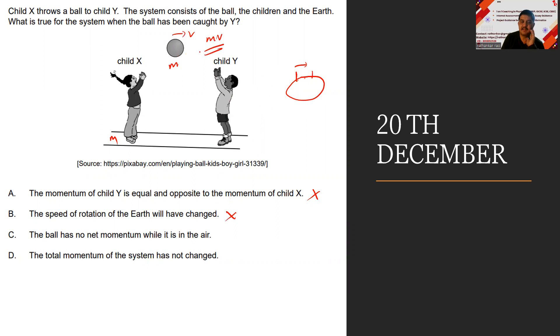The total momentum of the system has not changed. Let us validate this. He throws like this and he receives it. While doing this, what kind of forces do we have? These are all due to internal forces. Whenever we have internal forces, the momentum is conserved. Therefore, the right option is D.